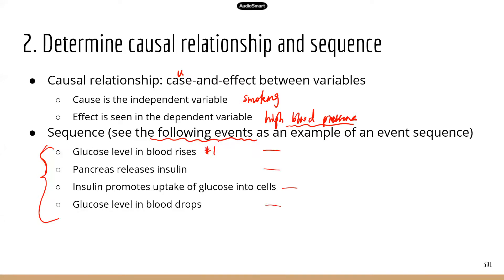Glucose level in blood rises, which triggers step two: the pancreas releases insulin. The insulin gets into the bloodstream and reaches tissues and cells. Step three is insulin working on individual cells, allowing them to take in glucose. The outcome — step four — is glucose level in blood drops, because glucose is taken into the cells and the level returns to normal. That's the correct sequence for insulin regulation of blood glucose.